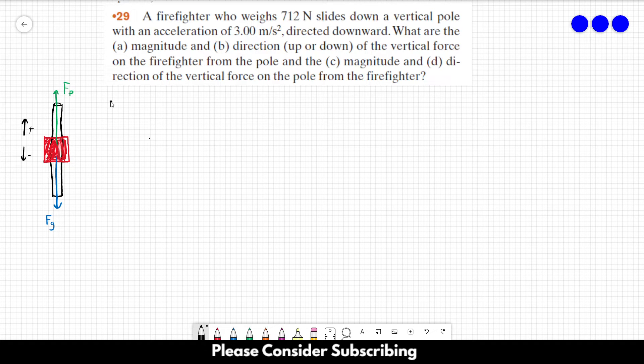So we know from Newton's second law that the sum of the forces is equal to mass times acceleration. But in this case, we only have one dimension, so we can put aside the vector. So we can rewrite Newton's second law as the sum of the forces equal to mass times acceleration, but without the vector.